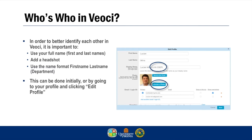Veochi is used by well over 500 users across the University of Virginia, City of Charlottesville, and Albemarle County. During events, responders utilize Veochi as a means of communicating effectively with each other in a virtual environment. In order to better identify ourselves, it is important to use your full name, add a headshot for your avatar, and use the display name format: first name last name (department). This is best done initially when setting up your profile, but can always be done by going to your profile and clicking edit profile.